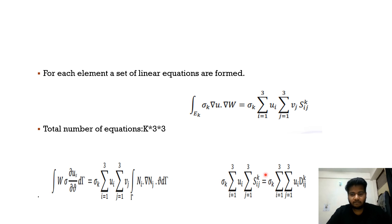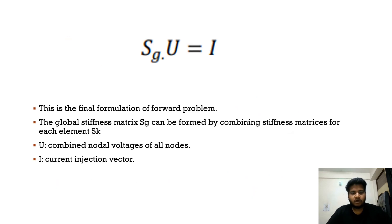We can finally formulate the forward problem as Sd·u = i, where Sd is the global stiffness matrix, u is the combined nodal voltages of all nodes, and i is the current injection matrix. That was our main goal — to find the global stiffness matrix — and that can be found using the method discussed. The global stiffness matrix can be used to simulate the nodal voltages, which can then be compared to the solution from the EIDORS software for the forward problem of EIT.